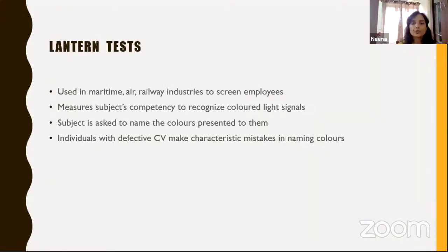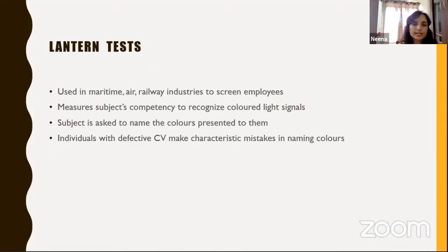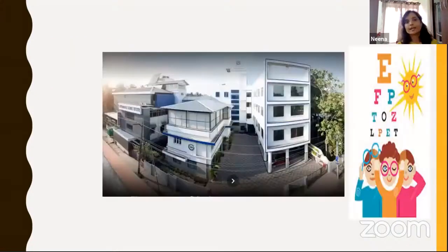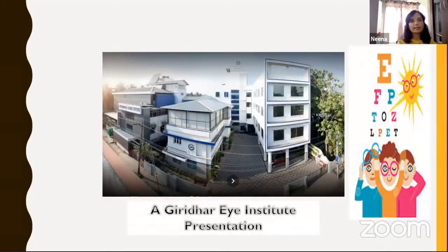Finally, certain vocational tests such as lantern tests are commonly used by railway, maritime, and aviation industries to screen employees. They measure the subject's competency to recognize colored light signals in particular environments. The subject is asked to name the colors presented, and individuals with defective color vision make characteristic mistakes in naming colors. Based on this, the test is interpreted. That concludes the overview of various color vision tests and commonly used visual acuity charts.